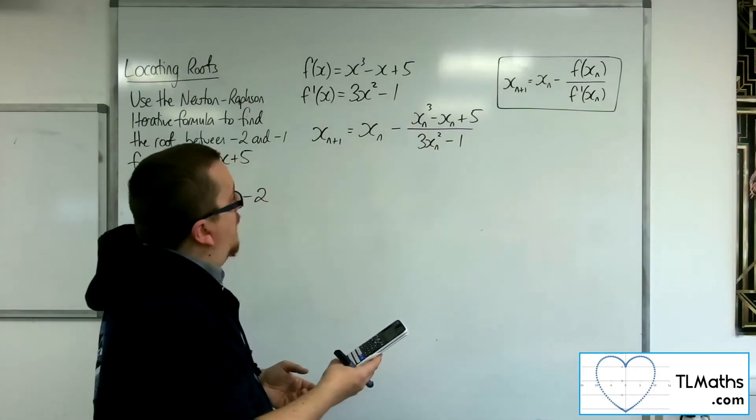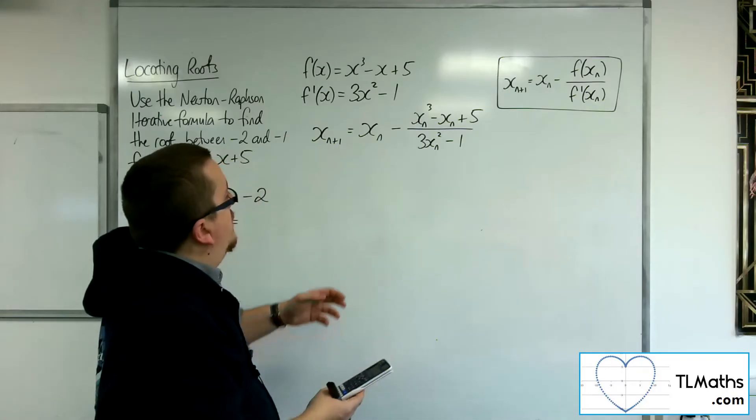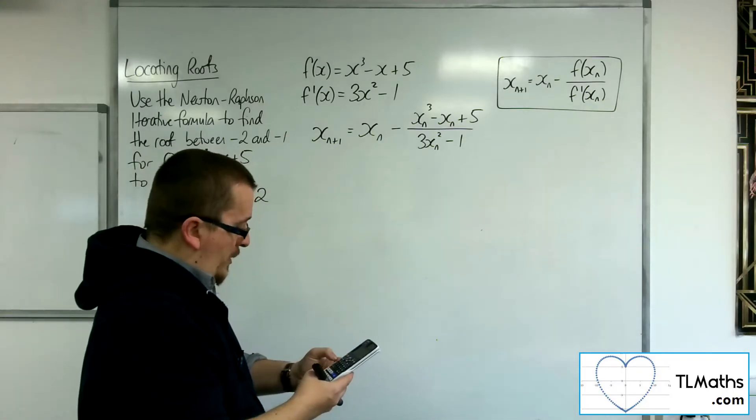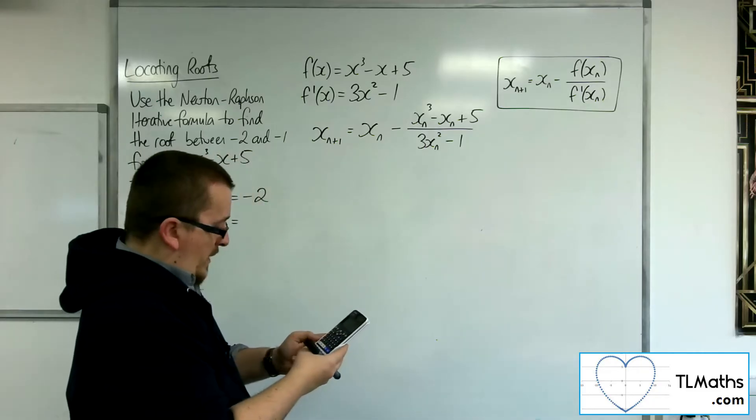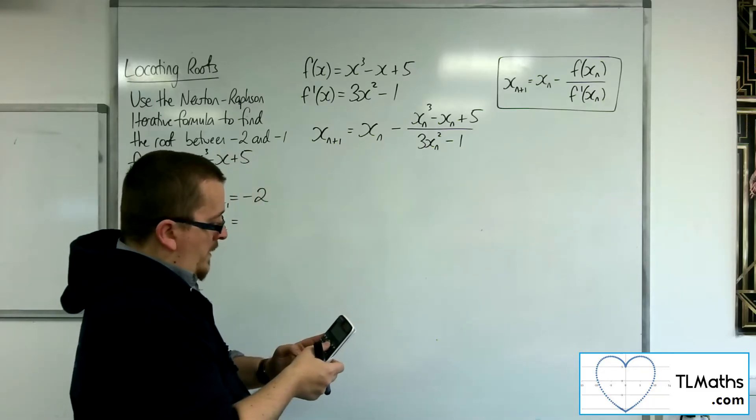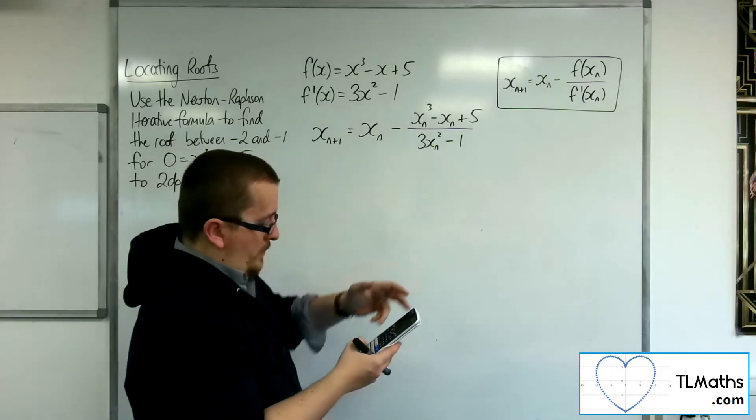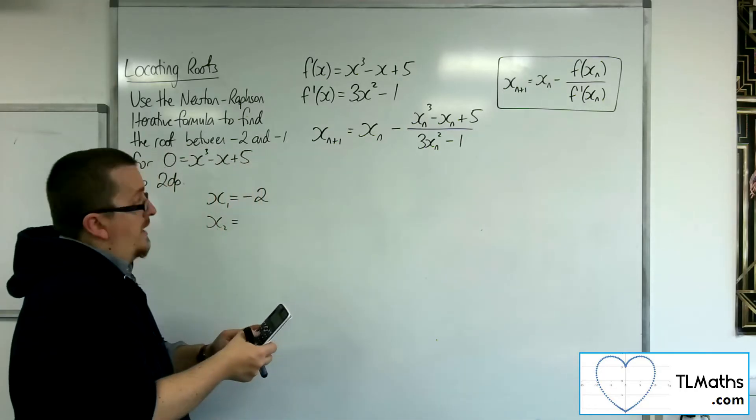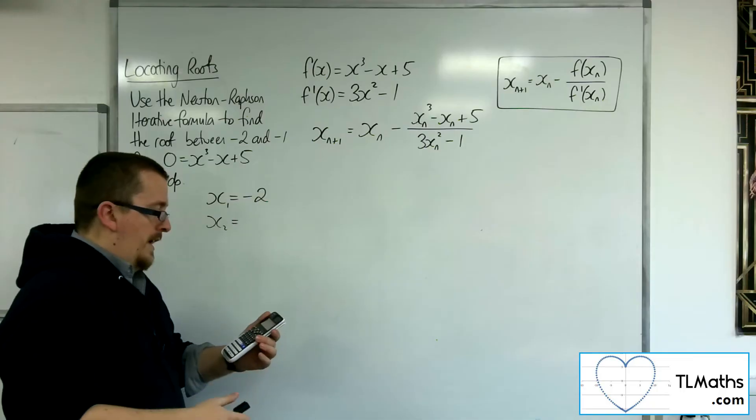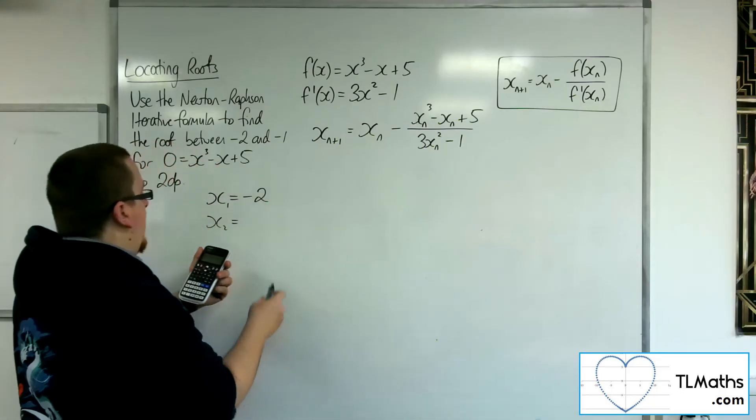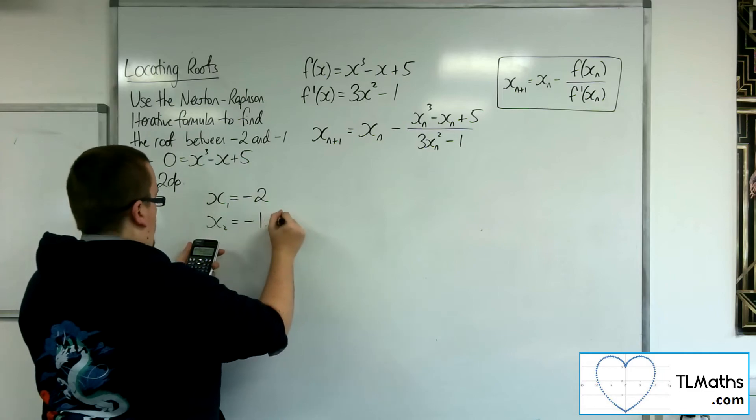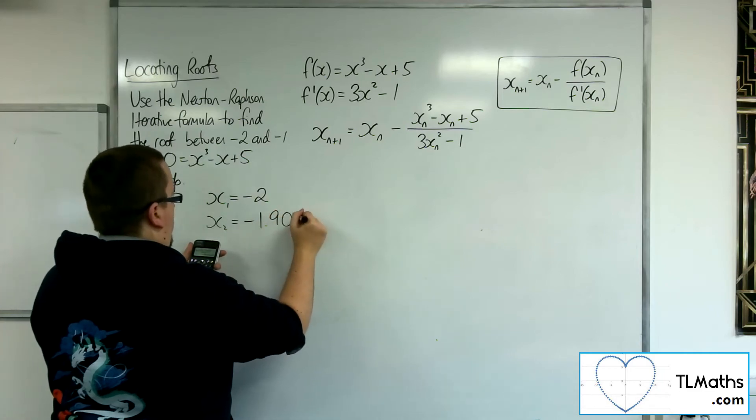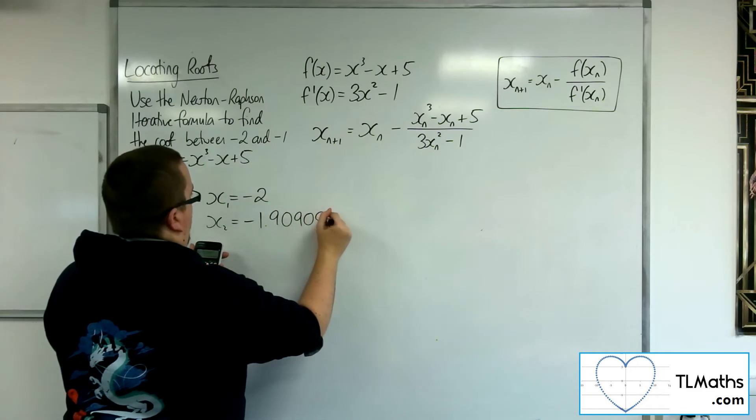Now I'm going to have the answer key, take away, opening up a fraction, answer key cubed, take away the answer key plus 5. And in the denominator, I'm going to have 3 times the answer key squared, take away 1. So I press equals, and I get -21/11, so -1.90909, etc.